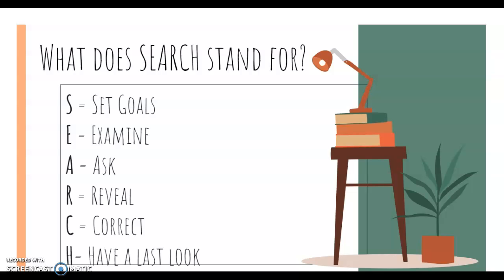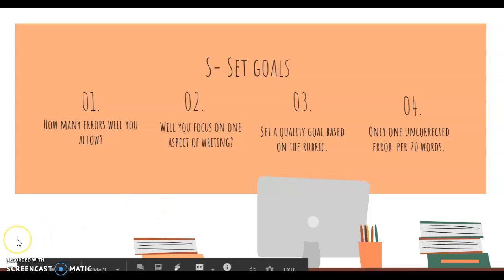Let's look and see what each of these things means. So S, setting goals. This is what you want to do before you start editing your paper. You want to have a place to go. You want to have a final destination as you start. So how many errors are you going to allow in your final paper?